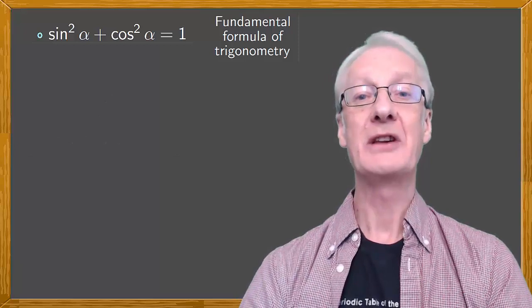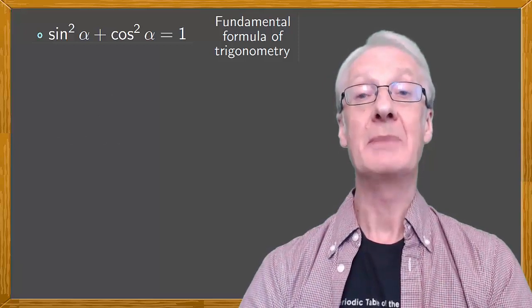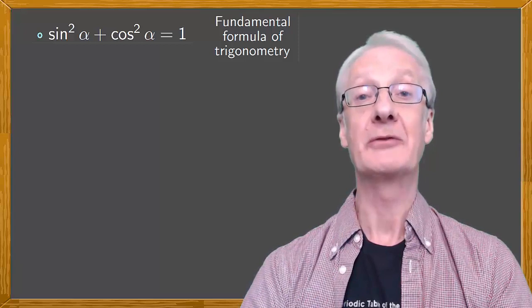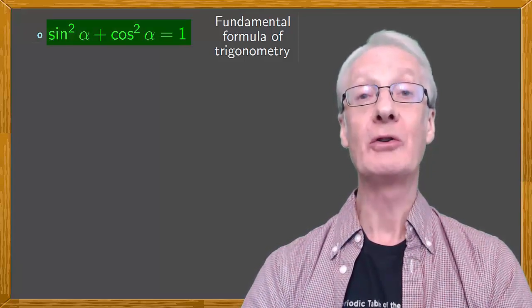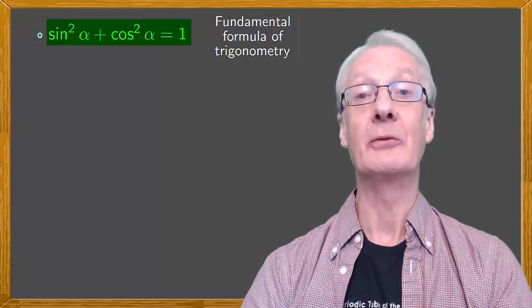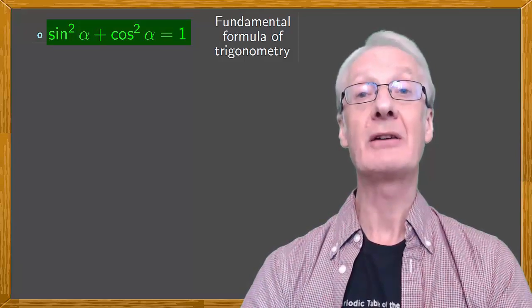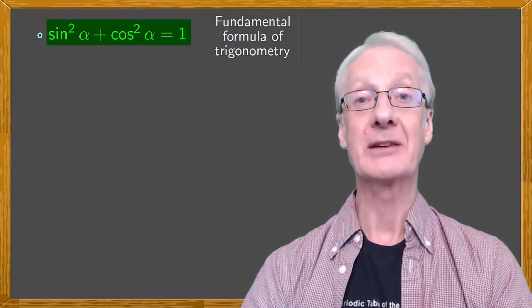Now let's obtain the two other formulas we mentioned at the beginning, based on the fundamental formula of trigonometry. To do this, we simply divide all the terms of the fundamental formula by sine squared alpha and by cos squared alpha, respectively.